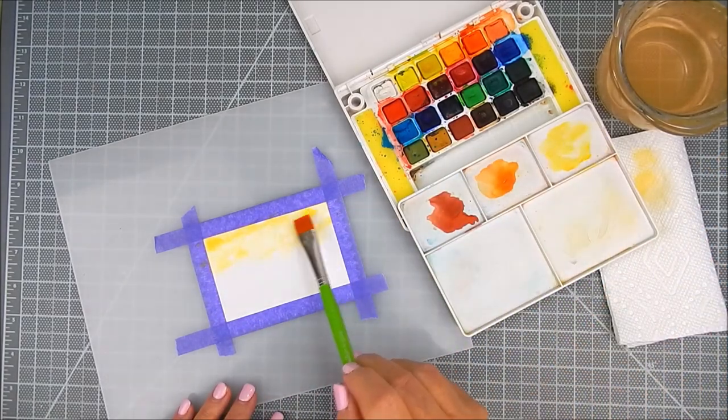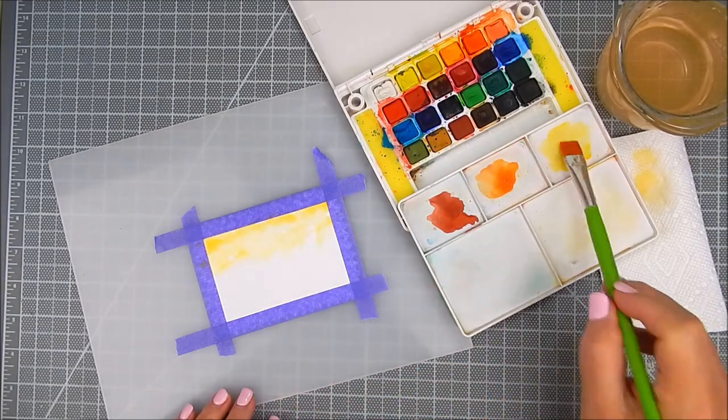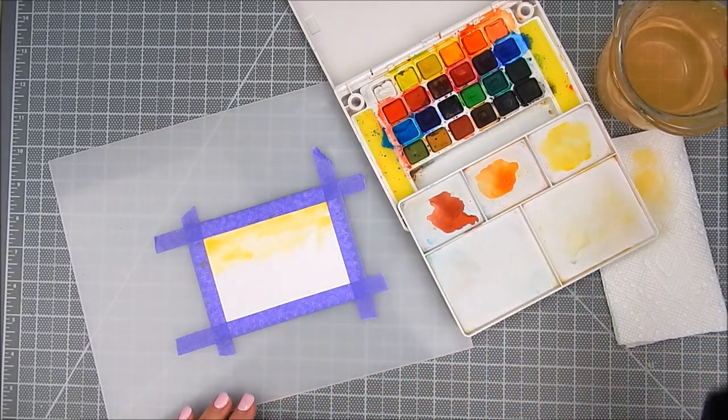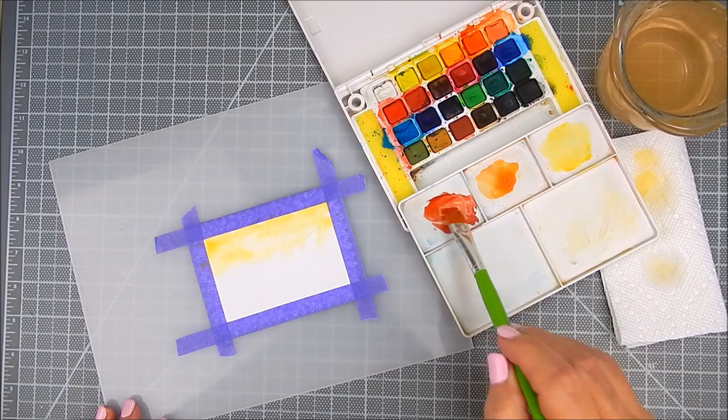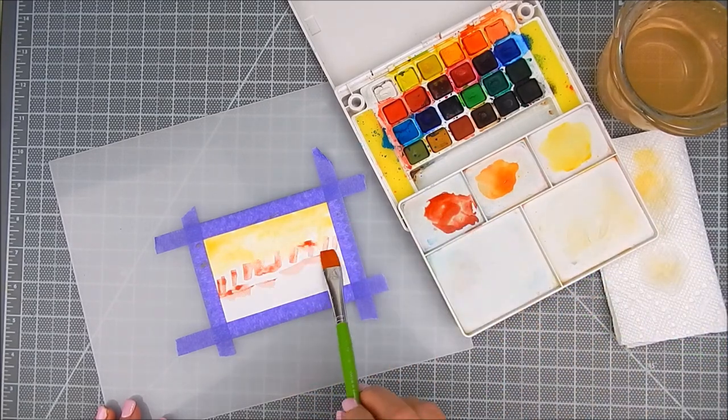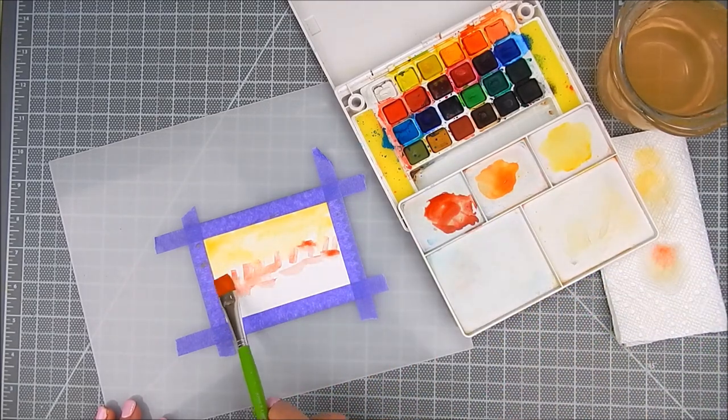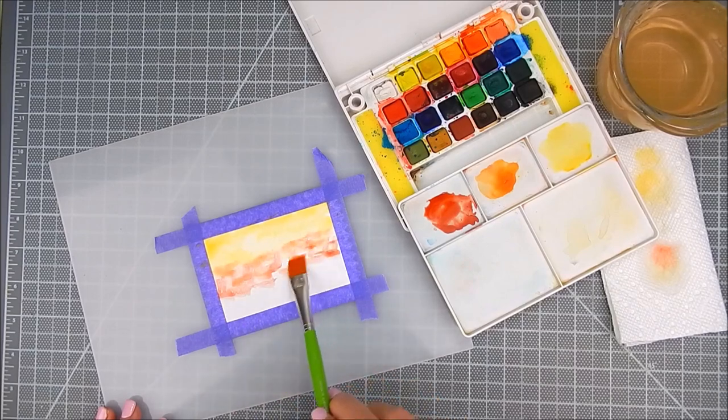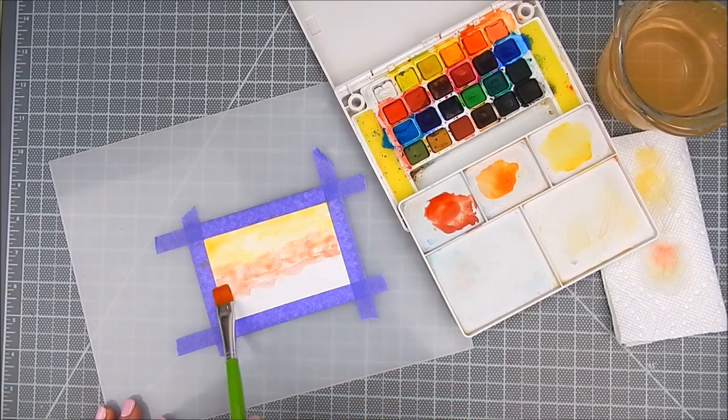I'm adding a little light yellow. I like to tap the watercolor on first, and then I use some water to blend it out, still tapping.